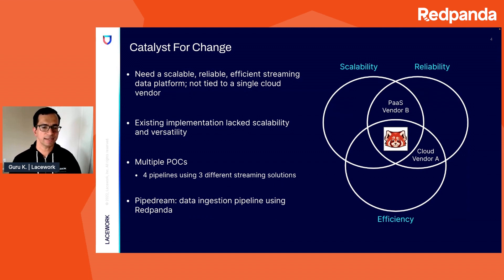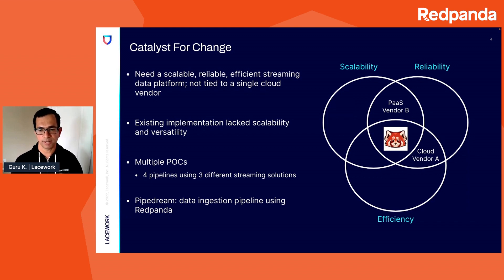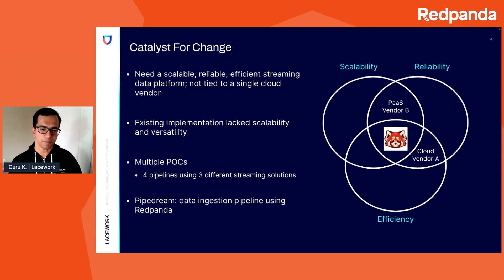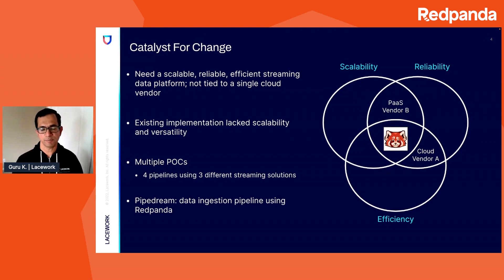In our journey to build the next generation ingestion platform for Lacework, we experimented with multiple technologies, some well-known and established, and some new. We built many POC pipelines using them and tested with production data. We measured their performance and found that while all other technologies were coming short, Red Panda excelled in more than one dimension. During our benchmarking, we hit the limitations of our benchmarking tool, but Red Panda was barely breaking a sweat. Based on the benchmarking data, we selected Red Panda to be the streaming platform on which we will build our new data ingestion architecture. Since this architecture looked too good to be true, like a Pipe Dream, we named it so.